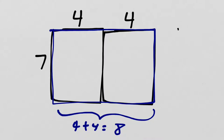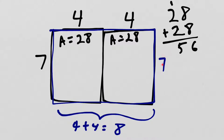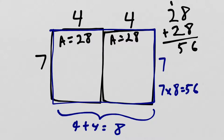The side length is now 4 plus 4, which equals 8. We already solved for the area of one of them being 28, so the area of two of them should equal 28 plus 28. Let's do a little side math: 8 plus 8 is 16, carry the 1, and 1 plus 2 plus 2 is 5, so it should be 56. Our new side lengths are 7 and 8, so 7 times 8 equals 56. That's not a coincidence — whether I solve it with the new side lengths or the old side lengths, I get the same answer.